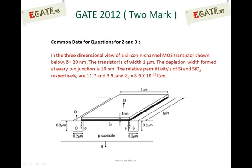This is also called the length of channel, and the width of channel is shown in the three-dimensional view. So 1 micrometer is the width of the channel. The source is also 1 micrometer and drain is also 1 micrometer. Width of channel or width of transistor is 1 micrometer.